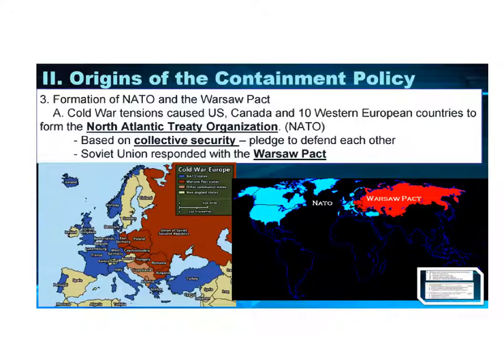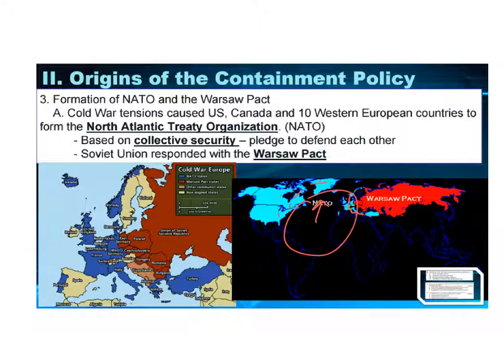More containment policy: containment meant we weren't going to invade the Soviet Union, but we didn't know if they would try to invade other countries and make them communist. So in order to anticipate that, we create NATO — the North Atlantic Treaty Organization. It's a military alliance of countries around the North Atlantic: an attack on one is an attack on all. If you invade France, you have to mess with all of us. In response, the Soviets create the Warsaw Pact — them and all the little countries they already controlled officially in a pact, though those countries didn't really have a choice.